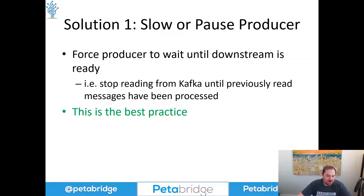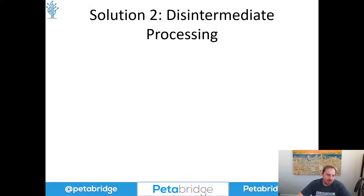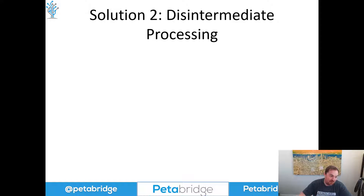Now, that's not always going to be possible. Good example: our web API from earlier — we don't really have the ability to tell clients hitting our HTTP endpoints to stop sending us requests for the time being. That's the same as being unavailable, so we have to be more creative in those scenarios. One technique we can use — which we're not going to show in this presentation, but if you're interested, check out our introduction to Akka Streams video — is disintermediation. Examples include buffering or queuing messages until they can be processed, deferring execution until we're ready.